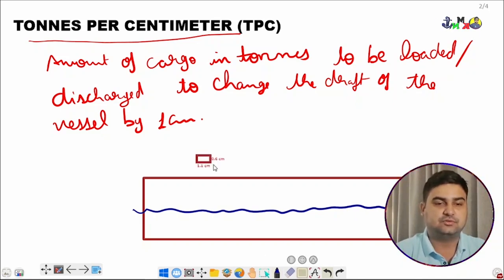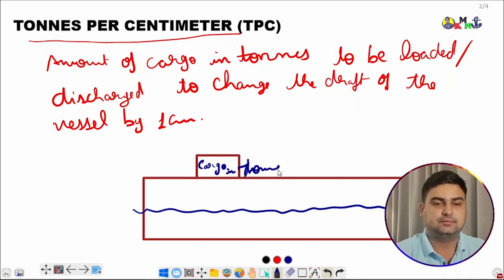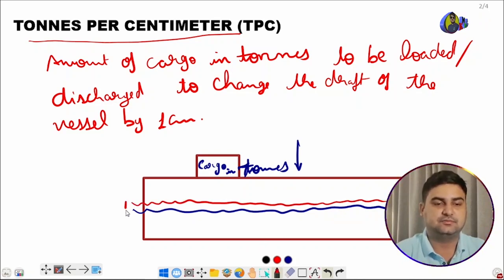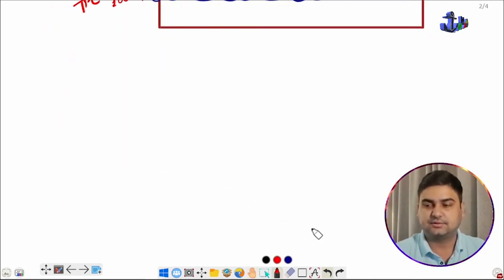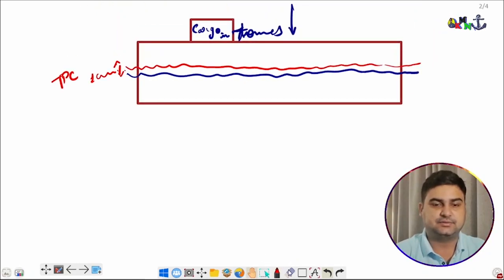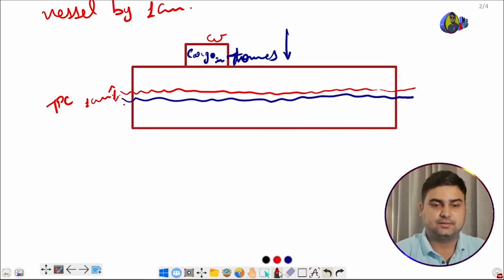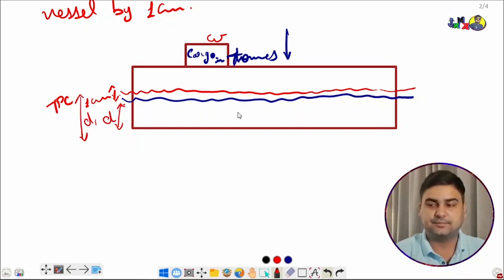Suppose this is a vessel. We need to load cargo in tons — how much cargo should be loaded to change the draft by one centimeter? That one centimeter change is TPC. To derive TPC: we load weight W, the original draft is D, the new draft is D1, and the change in draft is one centimeter.